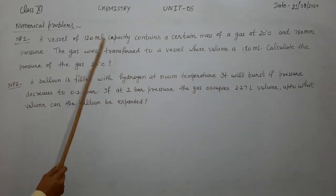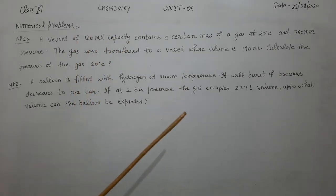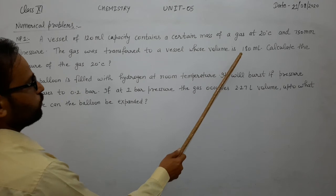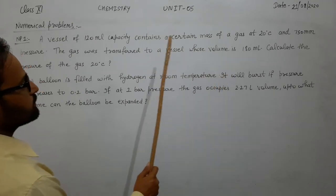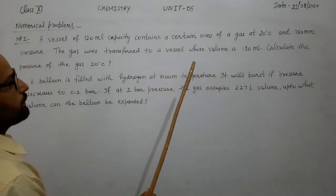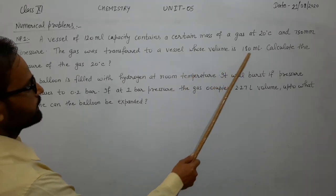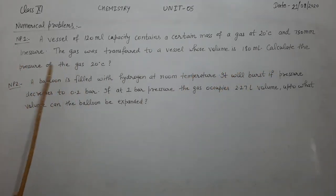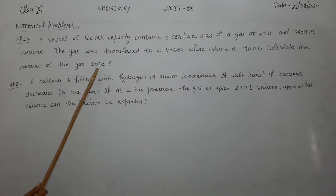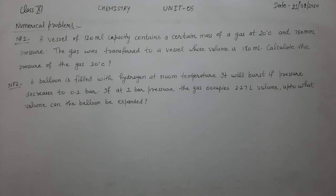The gas is in a 120 ml capacity container, and it is transferred to another container with a capacity of 180 ml. So the volume V2 of the gas has now changed to 180 ml. Calculate the pressure of the gas at 20 degree Celsius.